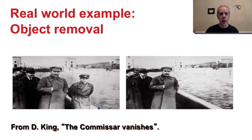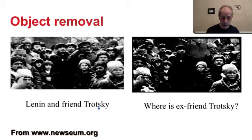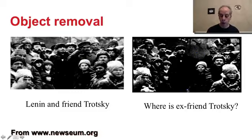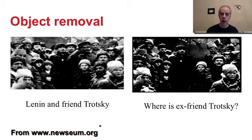We discussed in the first week that this is used all the time in the movie industry — I showed you examples of objects that need to be removed. Here is yet another example from the Soviet era: we see a picture of Lenin and next to him is Trotsky. In the altered version, Trotsky has been removed from the picture. So once again, an object has been removed, and you can find multiple examples of this kind of inpainting used to remove objects from images or video.